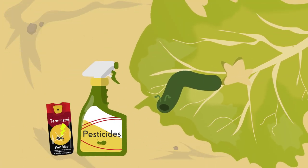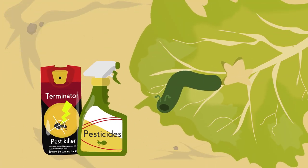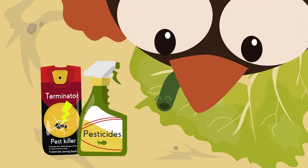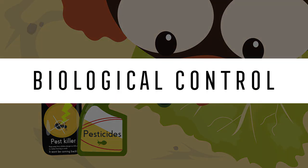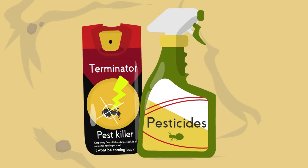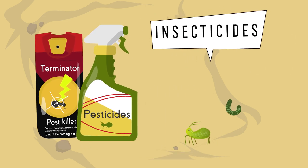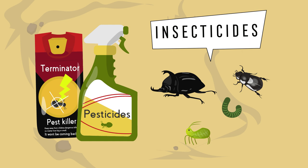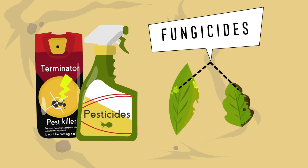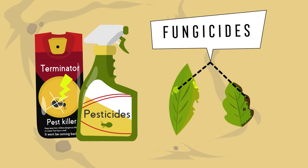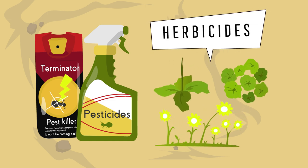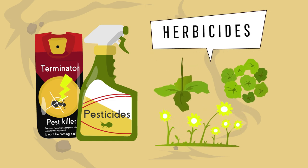Pests can be controlled using pesticides or by introducing other species, also known as biological control. Pesticides are natural or synthetic chemicals that are sprayed on crops. They include insecticides that control insects, fungicides that control fungi, and herbicides that control weeds — other plants that are not supposed to grow with the crop.